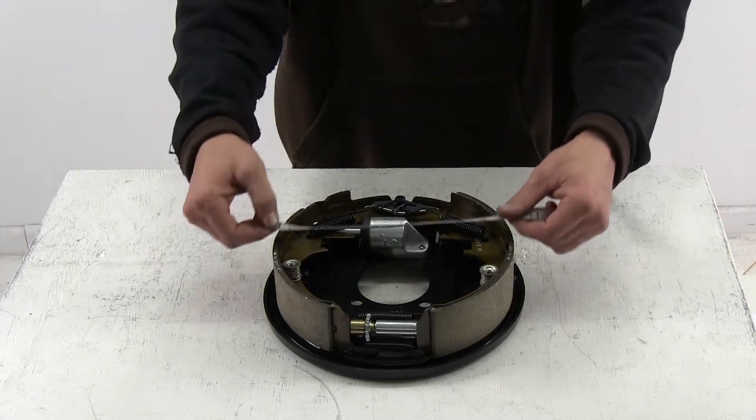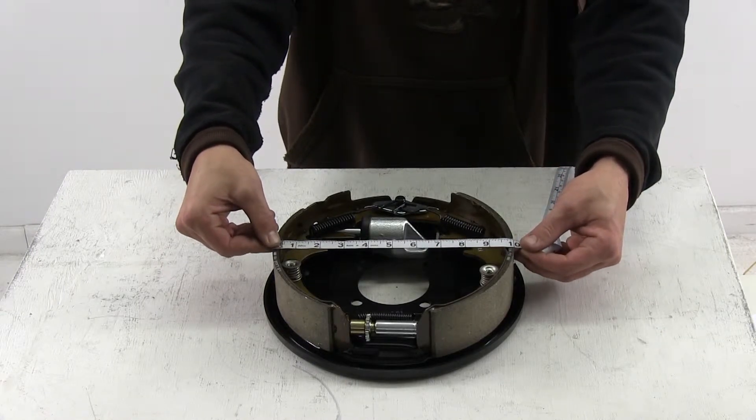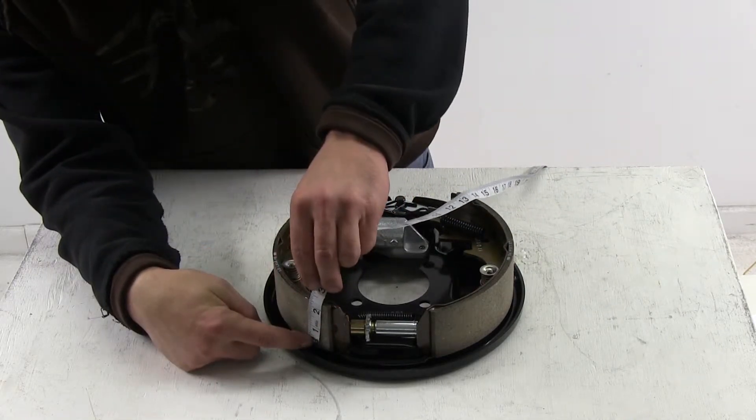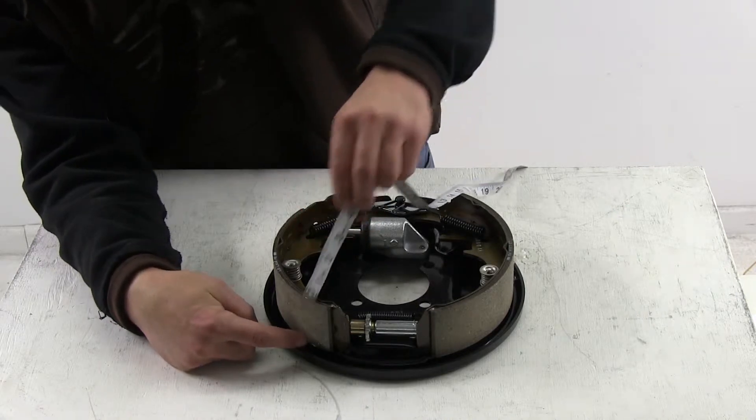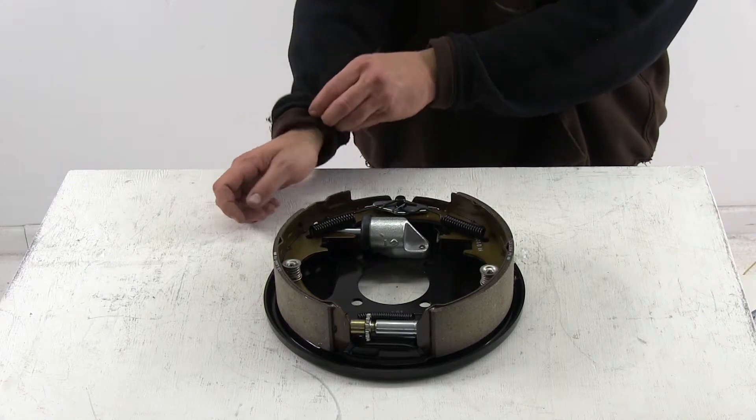To know the width of our shoes or setup we can measure across the linings and see that it's 10 inches, and we can measure the thickness or width of the shoe and see that it's two and a quarter. So we have a 10 inch by two and a quarter inch shoe lining setup.